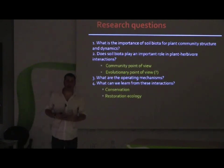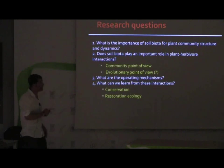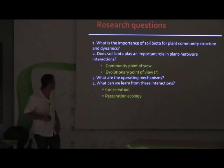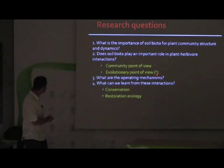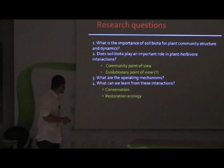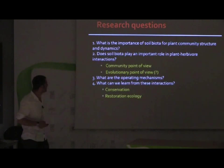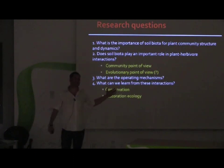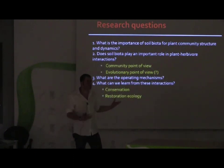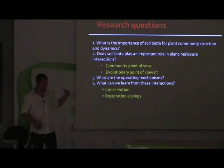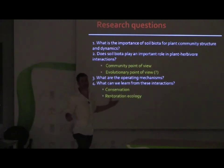If I have to put a framework to my research, I try to tackle more or less the same question in different systems: What's the importance of soil biota for plant community structure and dynamics? Does soil biota play an important role in plant-herbivore interactions from a community point of view, but also from an evolutionary point of view? What are the operating mechanisms? And what can we learn from these interactions for conservation and in particular in restoration ecology? I will show examples dealing with these questions in different natural systems.